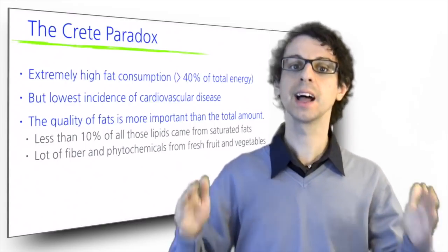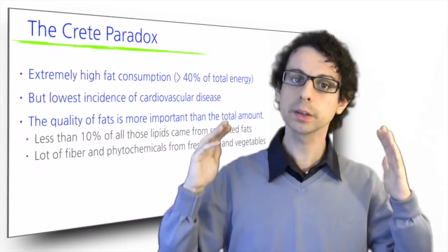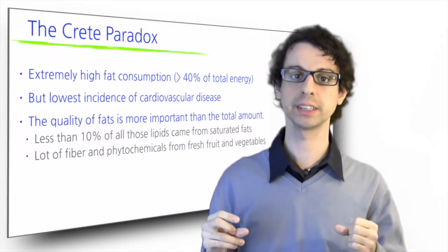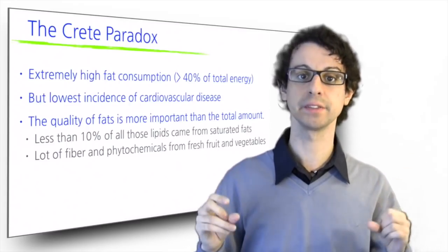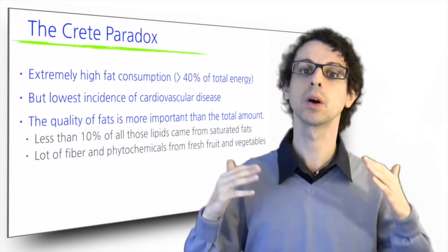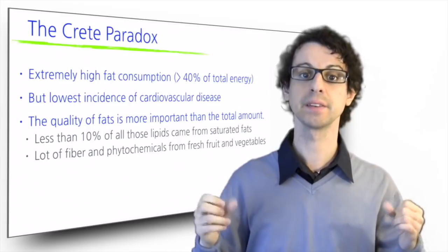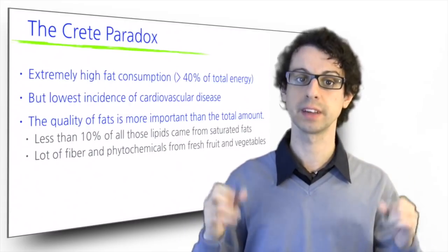In the Greek diet, less than 10% of all those lipids came from saturated fats. Their fat consumption came mostly from olive oil, olives and fish. And at the same time, they were also eating a lot of fiber and phytochemicals from fresh fruit and vegetables.